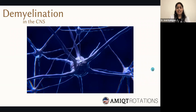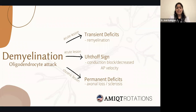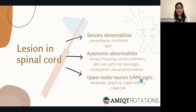When demyelination occurs, it's an oligodendrocytic attack that can be acute or chronic. If acute, we see transient deficits and remyelination is still possible; an important finding here is the Utsav sign — a conduction block or decreased action potential velocity. A chronic lesion leads to more permanent deficits with axonal loss and sclerosis, and remyelination will not be possible. With a lesion in the spinal cord, patients may present with sensory abnormalities such as paresthesias, pins-and-needle sensation, and numbness. Autonomic abnormalities include urinary frequency, constipation, and urinary retention. Upper motor neuron symptoms include weakness, spasticity, and a positive sign on C-spine.